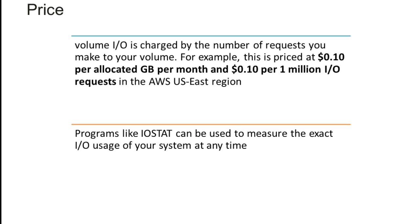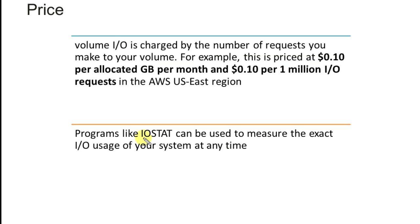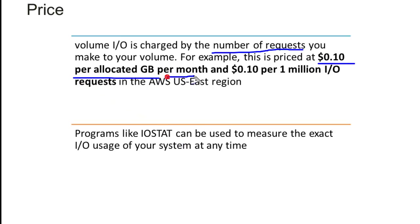The pricing mechanism for Elastic Block Service works as follows: volume IO is charged by the number of requests you make to your volume. The cost is 10 cents per allocated GB per month, and 10 cents per 1 million IO requests.